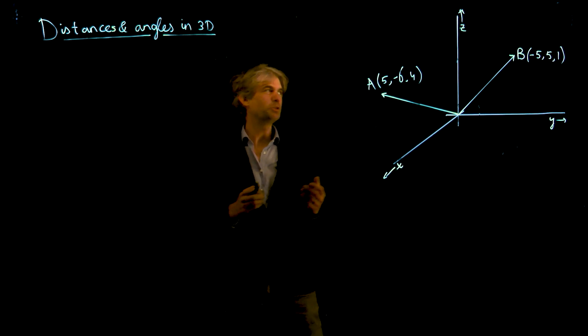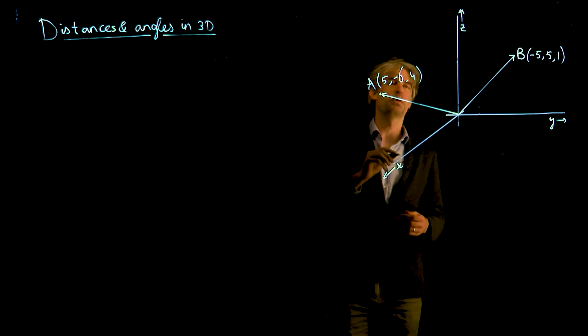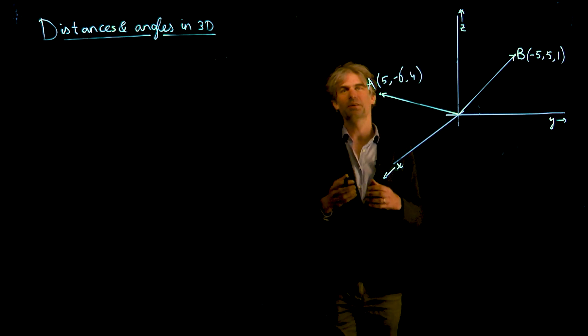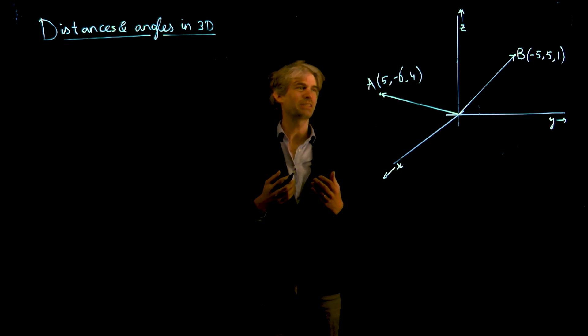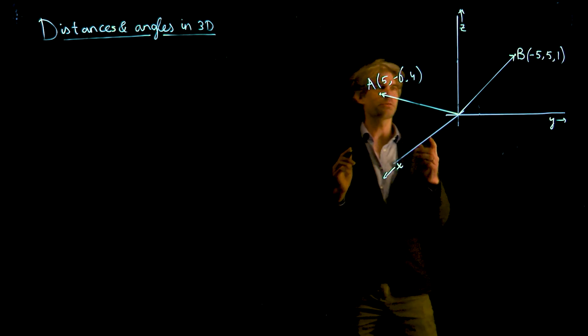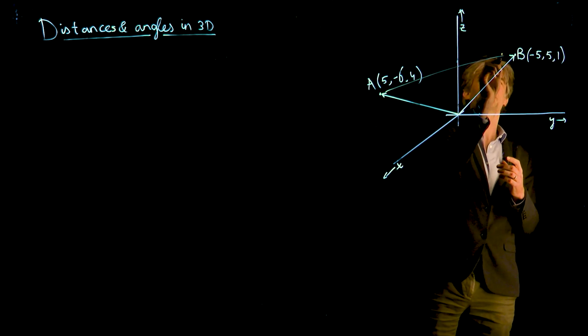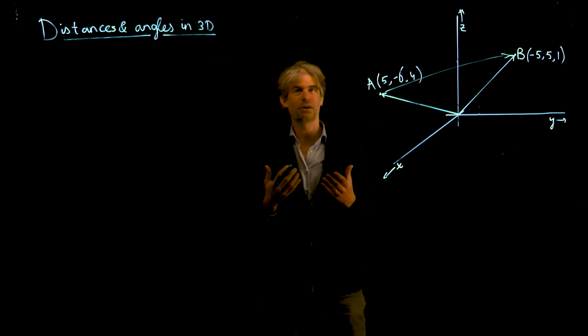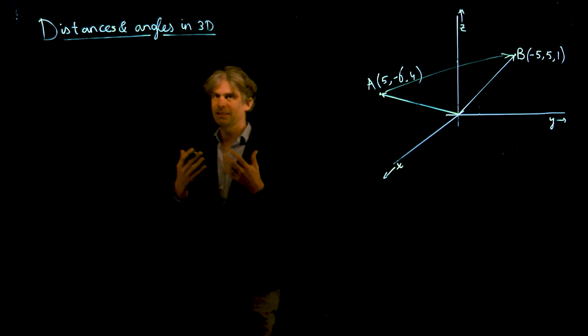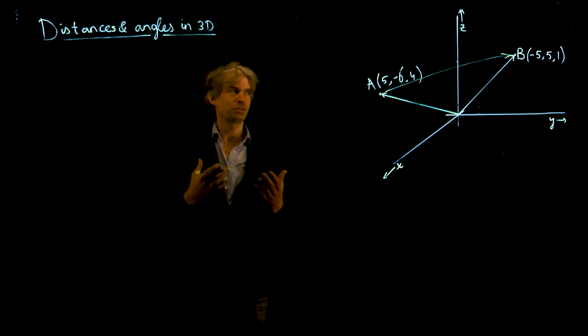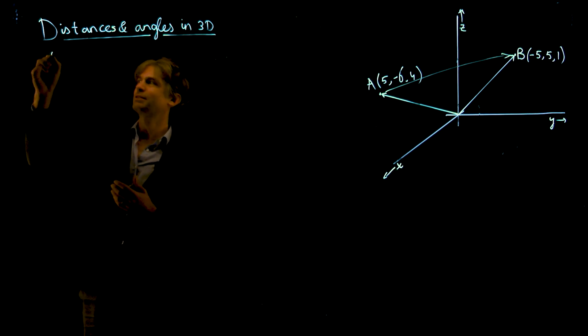The idea is if you have two points in 3D, say these points, and they are nicely described by coordinates, then computing the distance between these points is quite straightforward. The trick is to first look at the vector going from one to the other. So let's look at the vector from A to B, and then compute the length of this vector. If you want to compute the distance between two points A and B, just first create the vector AB.